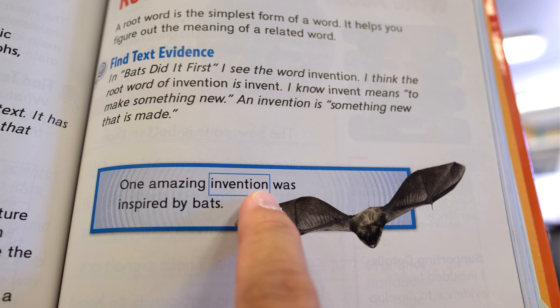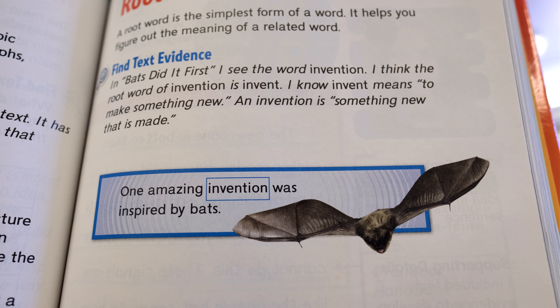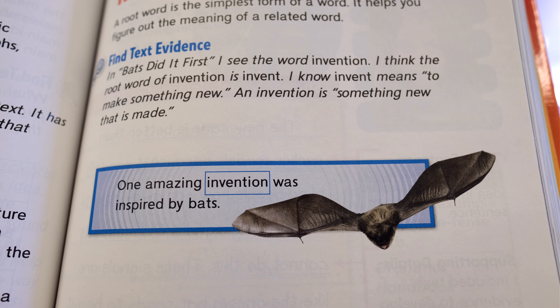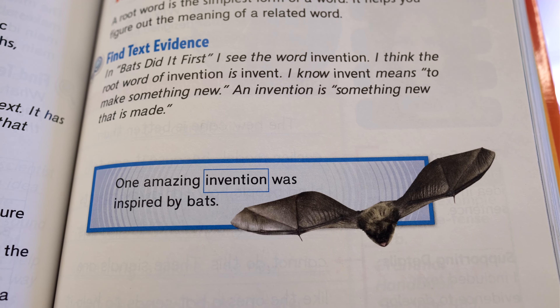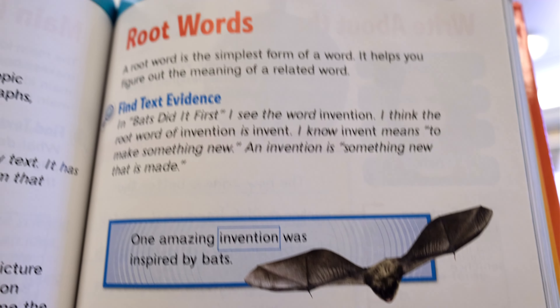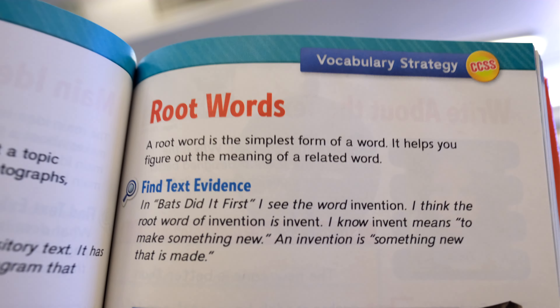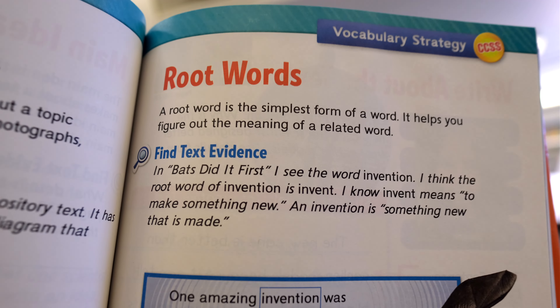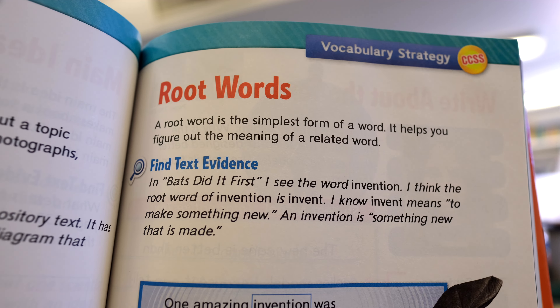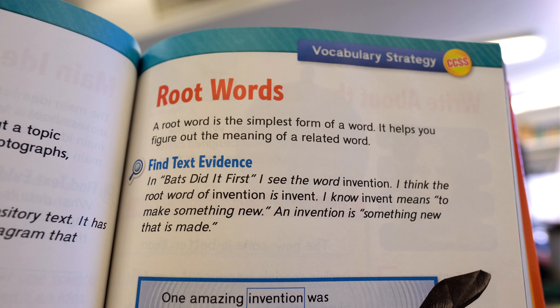Invent. So if I don't know the word invention, I can see the word invent inside that bigger word, and it gives me a clue. If I know the word invent, I might know the word invention. Root words are really helpful because if you can find root words in bigger words that you might not know, you might be able to figure out what the word means.